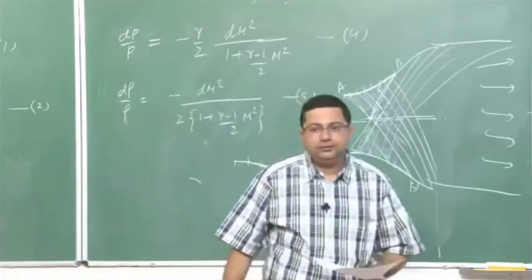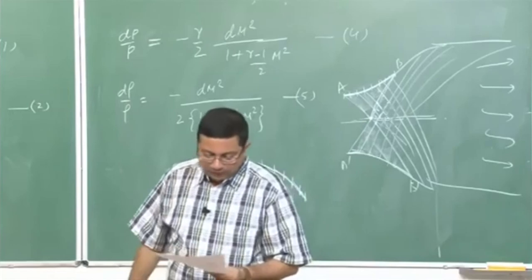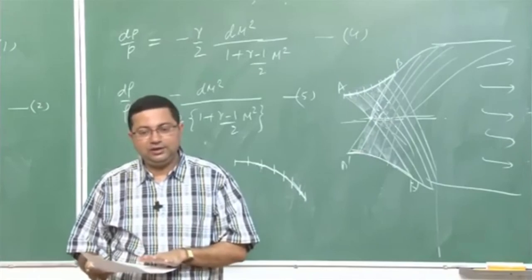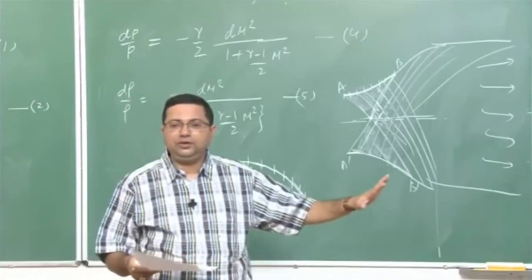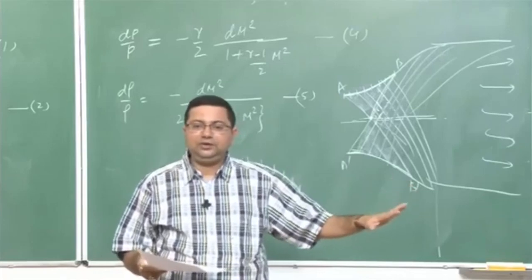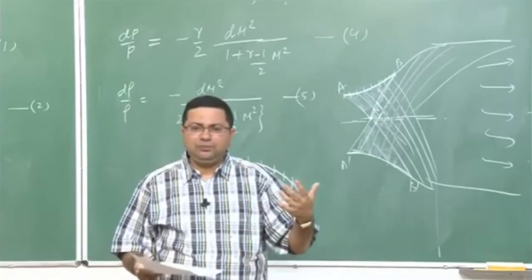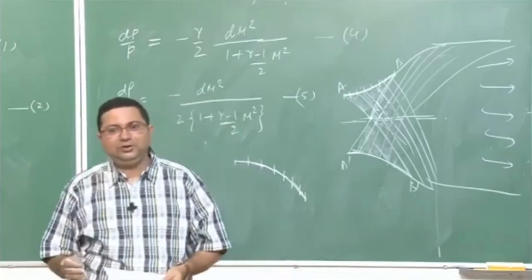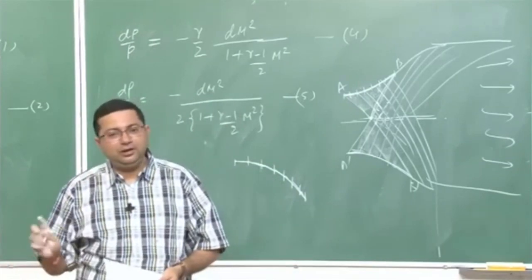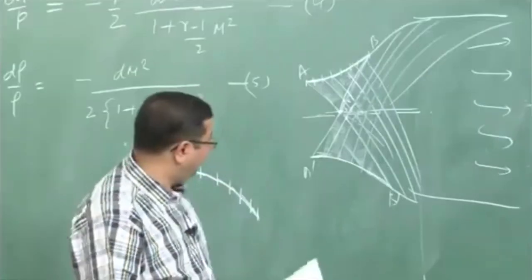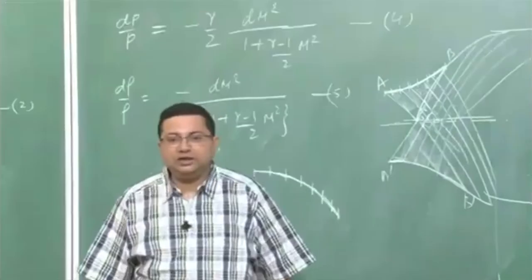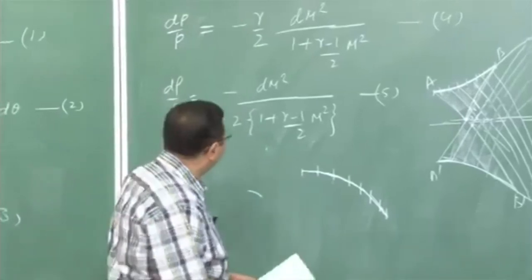I think we have used up the time for today. In the next class, we will first talk about the intersection of Mach lines, then continue with the design process using the method of characteristics and finish this discussion. After that, we will talk a little about plug nozzles, which are another type of shaped nozzle, and then briefly discuss the effects of friction and heat transfer. The main focus in the next class will be completing the method of characteristics, particularly what happens when Mach lines cross each other. Thank you.